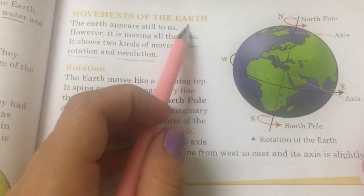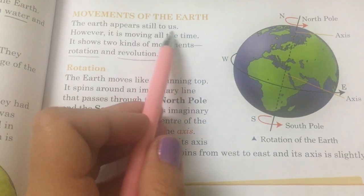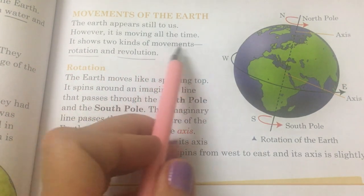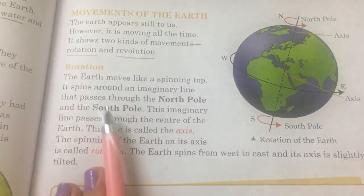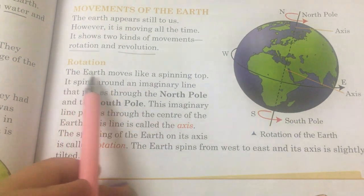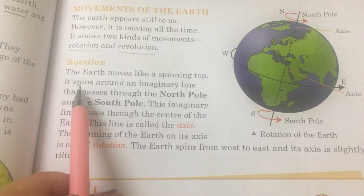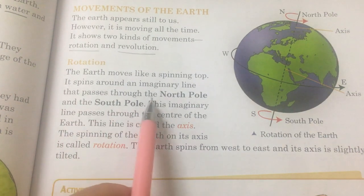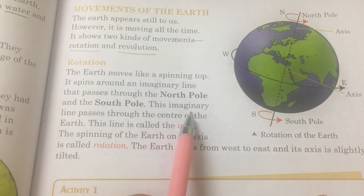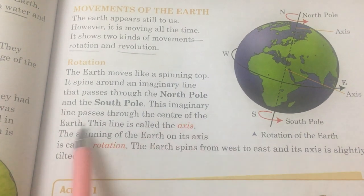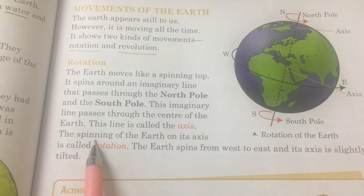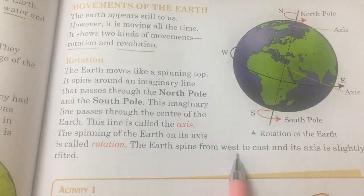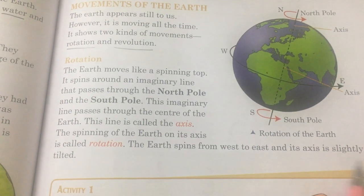Movements of the earth: The earth appears still to us; however, it is moving all the time. It shows two kinds of movements: rotation and revolution. The earth moves like a spinning top. It spins around an imaginary line that passes through the North Pole and the South Pole, through the center of the earth. This line is called the axis. The spinning of the earth on its axis is called rotation. The earth spins from west to east and its axis is slightly tilted.